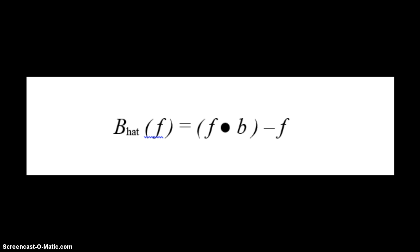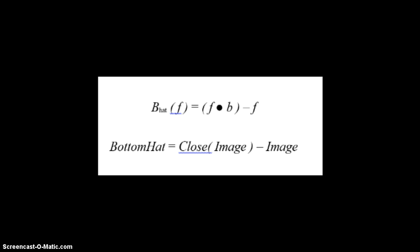Similarly, the bottom hat transformation of F is defined as the closing of F minus F. The filled circle represents the closing operation, as opposed to the open circle used in the top hat. So you take the closed image minus the original image — that is how you get the bottom hat transformation.